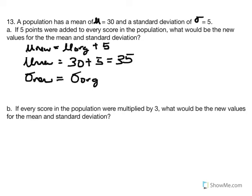So here we're adding a constant. Therefore, the new standard deviation will equal the original, and the original is equal to 5. When you add or subtract a constant, the mean will inevitably change because the sum of x will change. But the spacing or deviation spread between scores will not be affected.